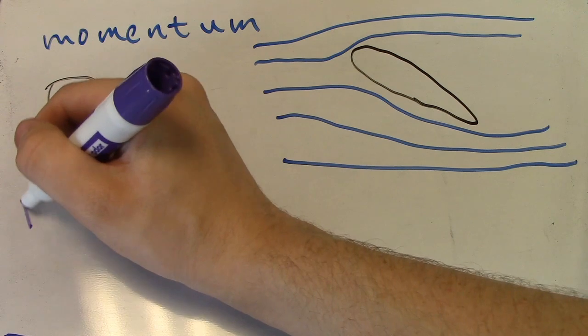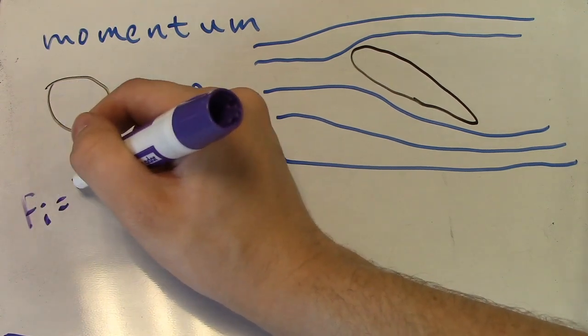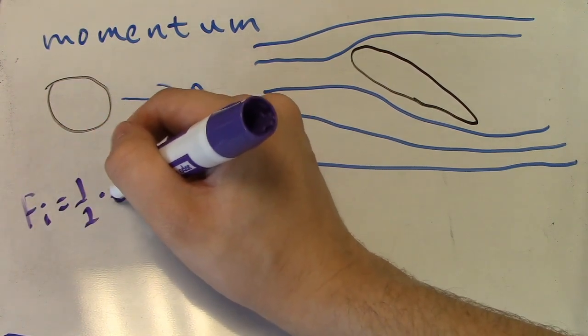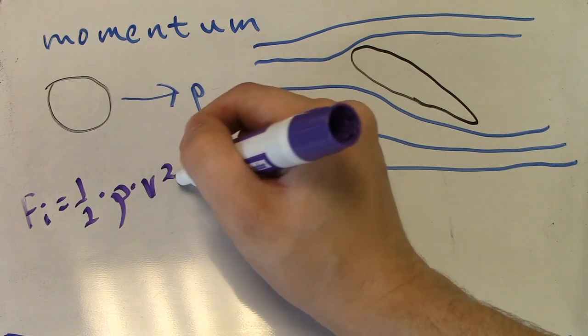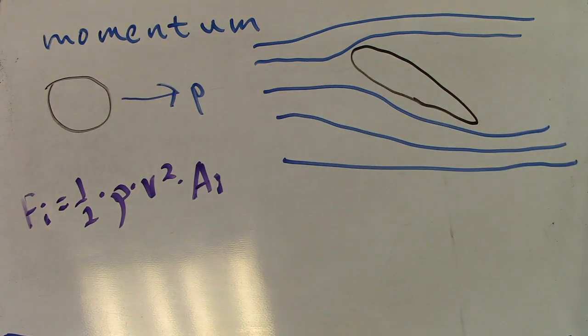You can calculate the inertial force from the equation F sub i equals one half air density, rho, times the velocity, v squared, times the area, a sub i.